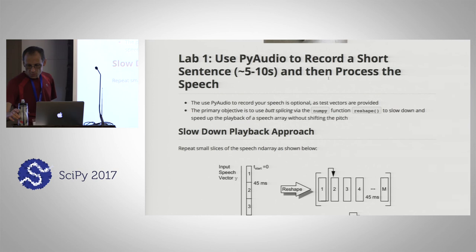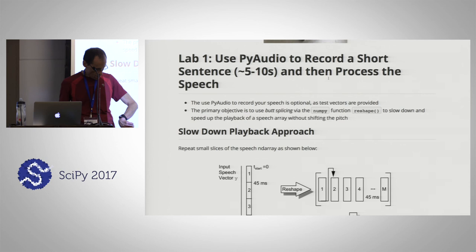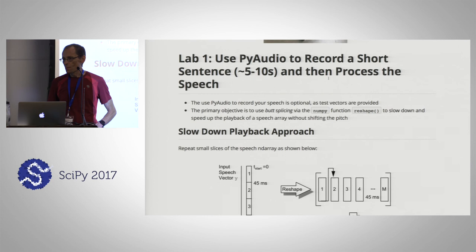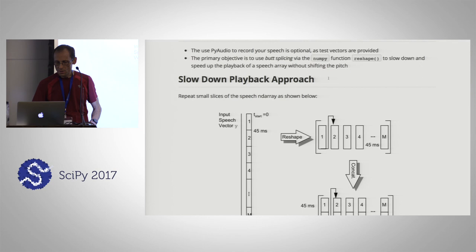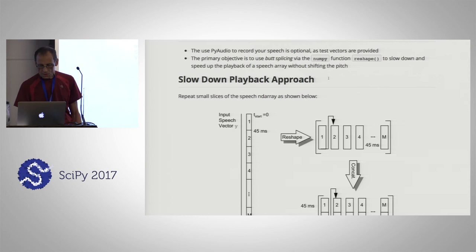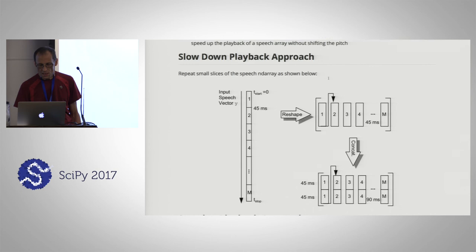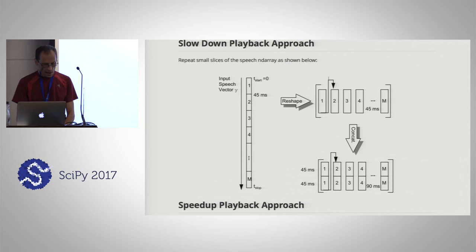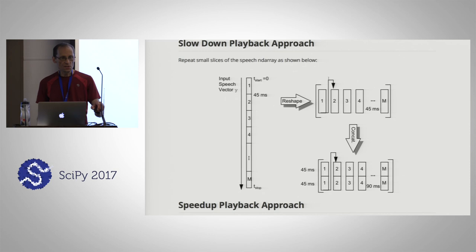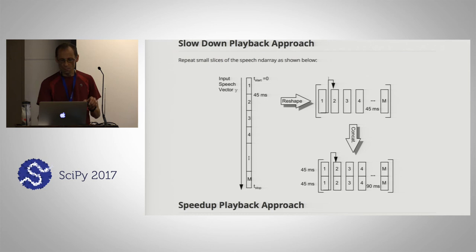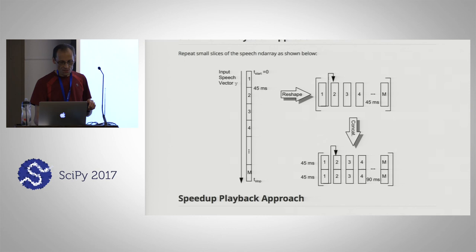I'm supposed to be aware that 2:15 to 4 is snack time. I'll introduce this lab and then we can decide whether to take the break before we start or after. The first lab is slow-down and speed-up playback. This is in a Jupyter notebook. You have a speech vector that has samples in it. Optionally, I'm going to play with PyAudio so you can record your own using the microphone on your PC — it's more fun to do this with your own voice because you'll hear yourself talking fast or slow with the pitch not changing.